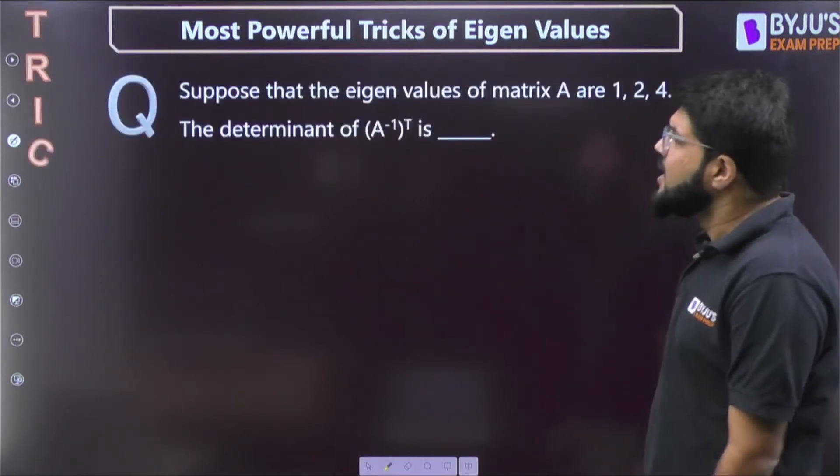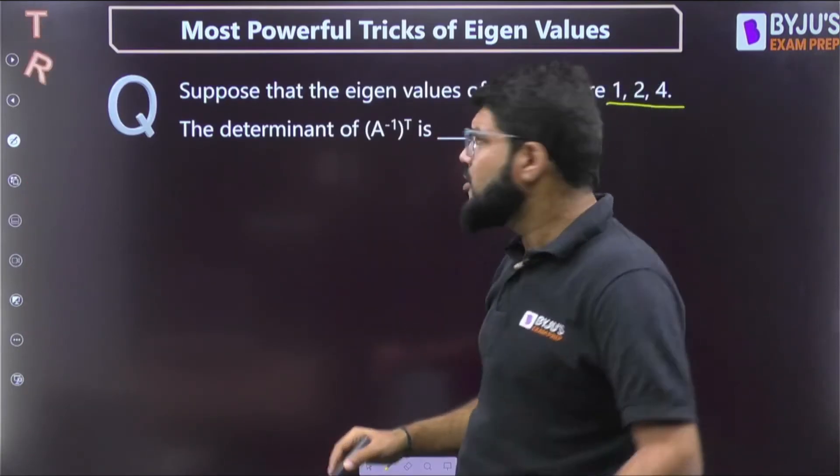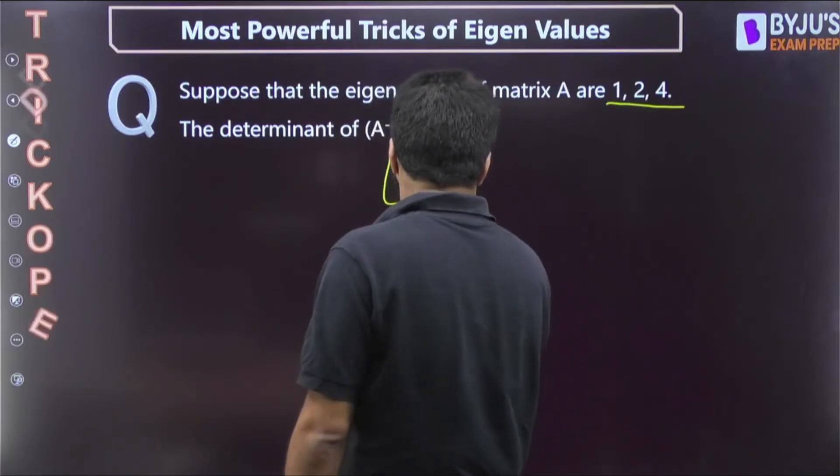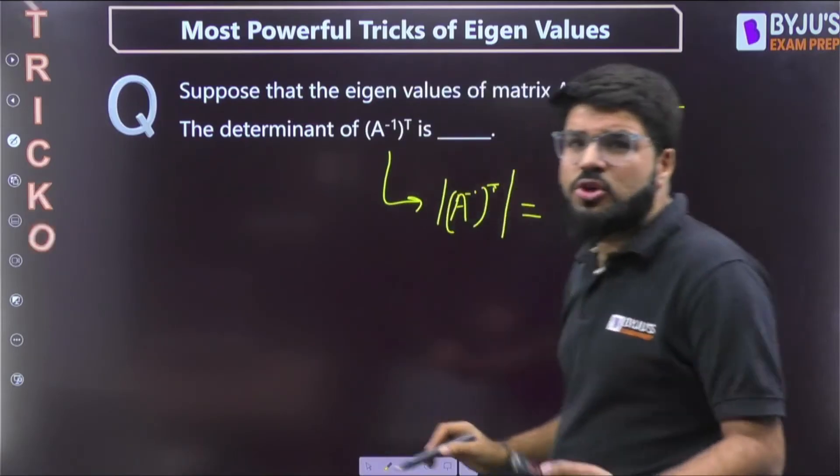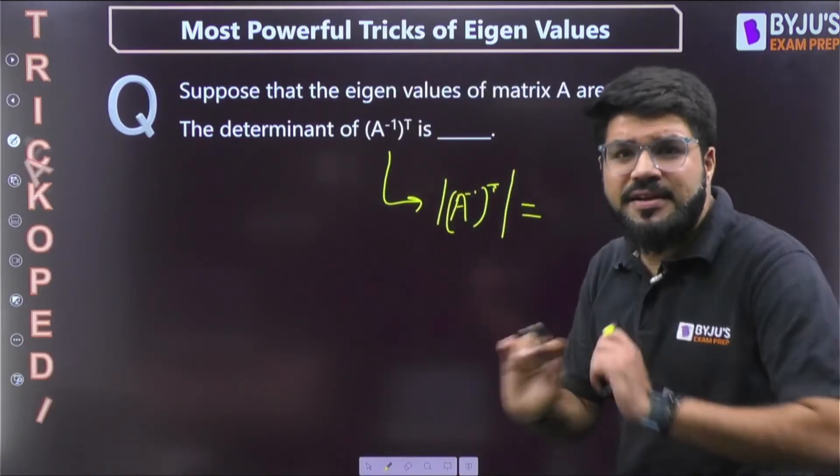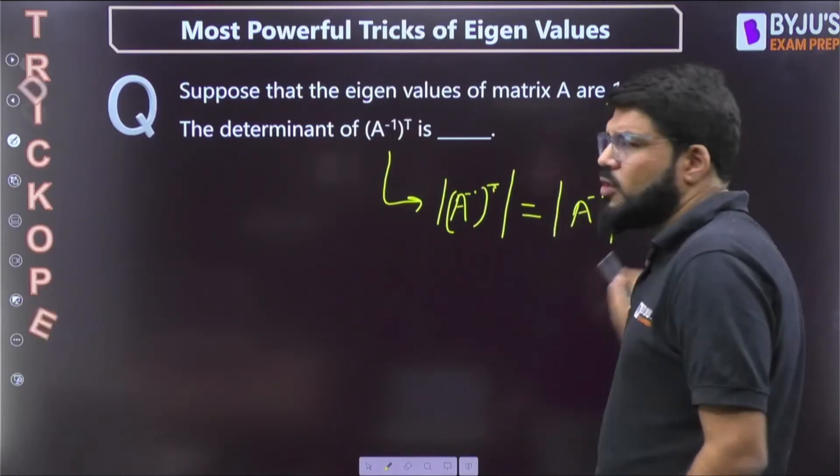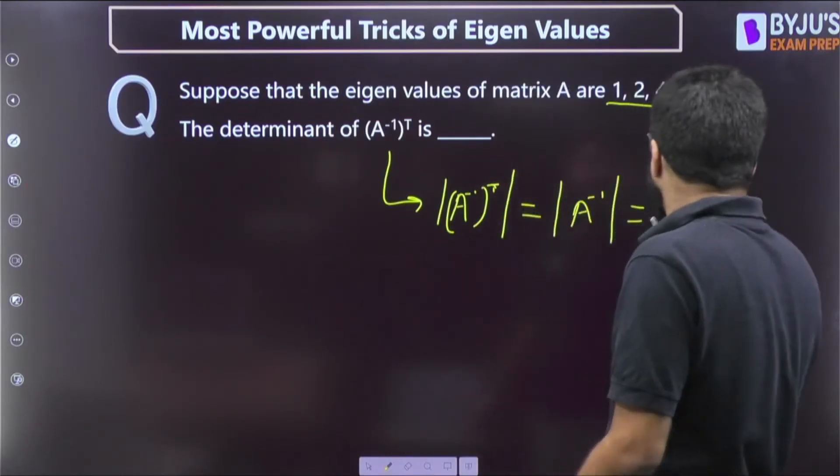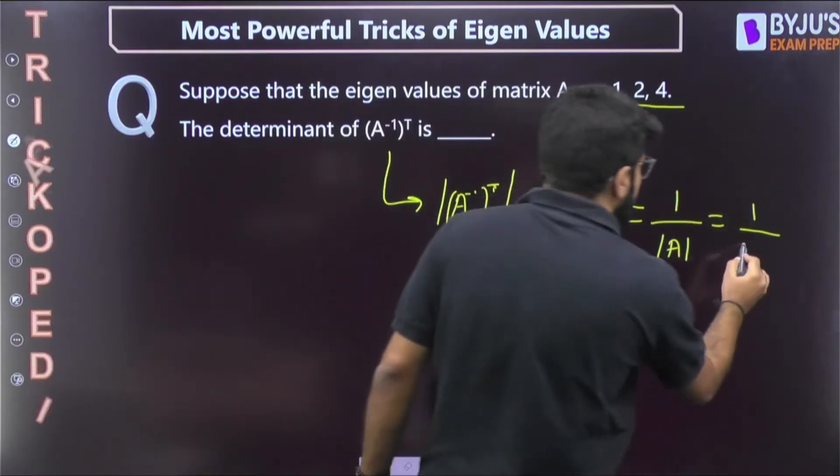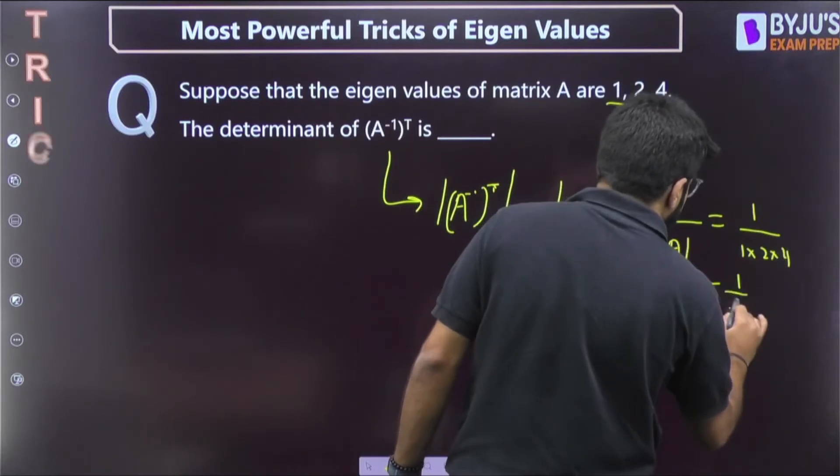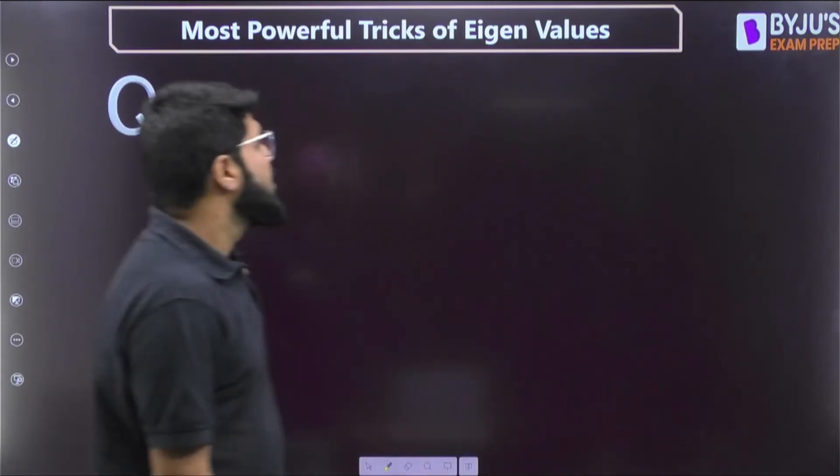Suppose the eigenvalues of a matrix are 1, 2, 4. What is the determinant of A inverse transpose? First of all, this is fundamentals of determinant: by taking a transpose, determinant is never affected. So determinant of A inverse transpose is same as determinant of A inverse. What is the determinant of A inverse? It is 1 upon mod A. What is the determinant of A? That is related with the eigenvalue, so it is 1 times 2 times 4, so final answer is 1 by 8. Numerical answer type question, 0.125 I will write down as the answer.